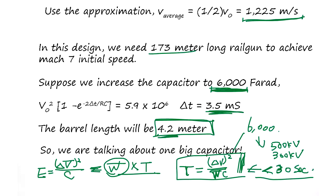If you want a faster fire rate, you need to improve the charging unit. But achieving fast charging at 500 kilovolts is very different from an electric car at 24 volts — the charging equipment is quite a challenge to design. This has been a review of college-level physics applied to railgun design; check other videos for more.